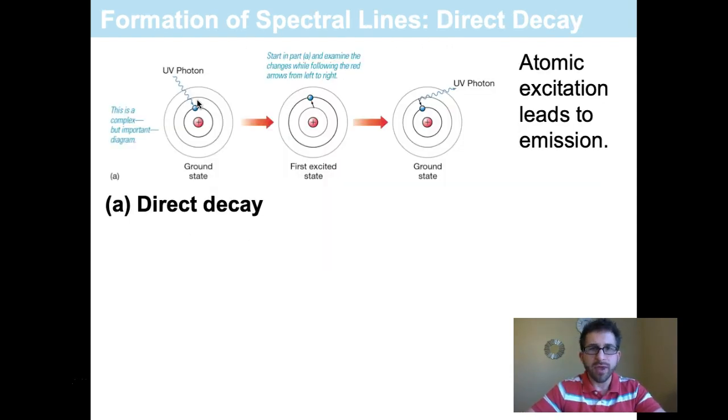So back to the Bohr model again. There are two main ways that spectral lines can be formed. The first is a direct decay. So we have a photon of light coming in. Here's our UV light photon. And that UV light photon hits one of the electrons that's currently in the ground state. So what ends up happening is the first excited state is achieved and the electron moves up. And at some point that electron falls back down to the ground state.